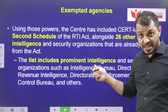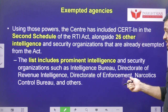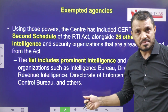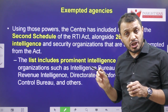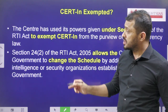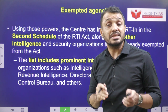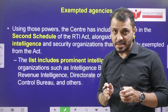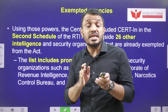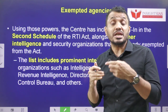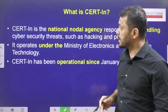The agencies exempted so far include the Intelligence Bureau (IB), Directorate of Revenue Intelligence, Directorate of Enforcement, Narcotics Control Bureau, and other organizations. Whichever organizations are exempted are placed under Schedule 2. Once a particular organization is put under Schedule 2 of Section 24, Clause 2, that agency is exempted from RTI, limiting public access to it. Note that the exact opposite of RTI is the Official Secrets Act, which protects classified information that affects the security of the country.